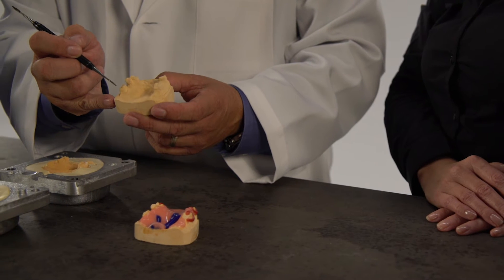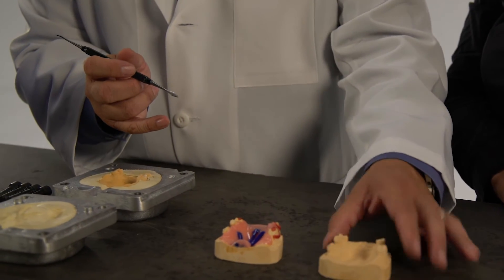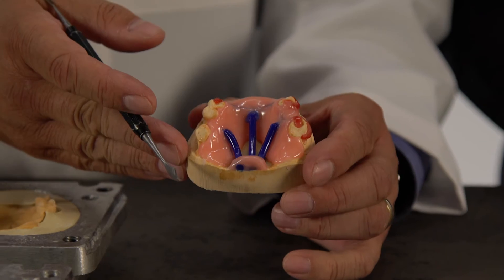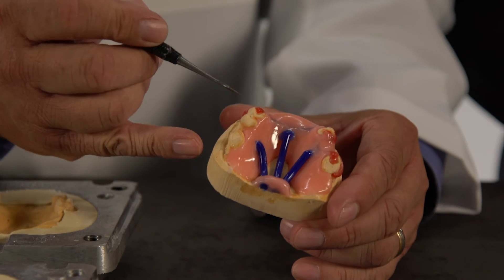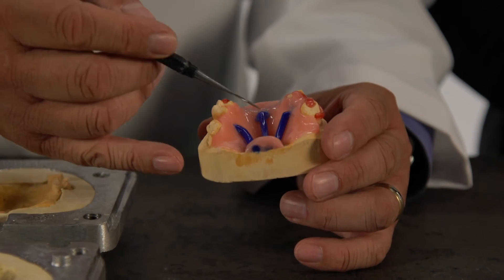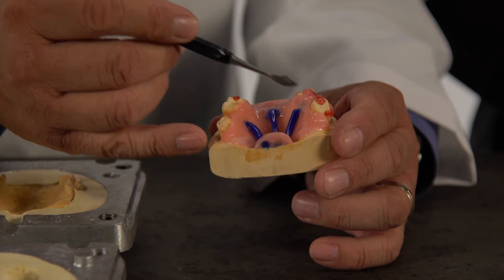First block out the undercuts for the correct path of insertion and add spacing wax on the saddle areas so there's room for acrylic to flow in the ridge areas. Next step, wax the framework with clasps, rests, major, and minor connectors.